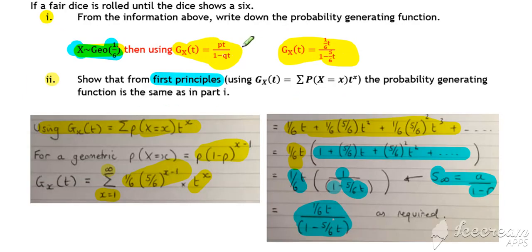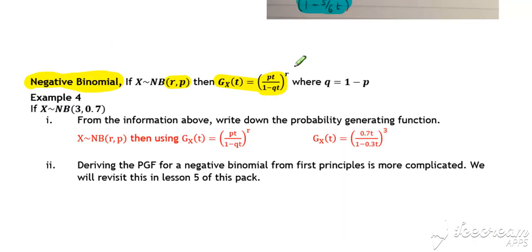One thing to notice here is this: for the negative binomial, it's basically the same as the geometric probability generating function, but raised to the power of r. So it's the geometric probability generating function raised to the power of r. And that's essentially because the negative binomial is r independent geometric distributions.